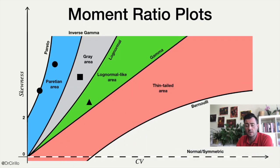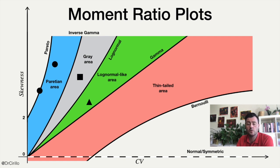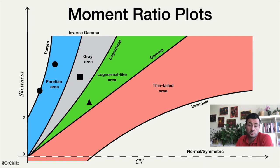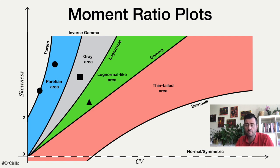The first plot is in the family of moment ratio plots. In a moment ratio plot, what you typically do is try to characterize distributions by looking at the joint behavior of some of the moments of a distribution. A very useful plot looks at the behavior of the coefficient of variation — which is nothing more than the ratio of the standard deviation over the mean — against the skewness. So on the x-axis you put the coefficient of variation, and on the y-axis you put the skewness. Essentially all theoretical distributions can be mapped in this plot, looking at the behavior of their theoretical coefficient of variation and their theoretical skewness.